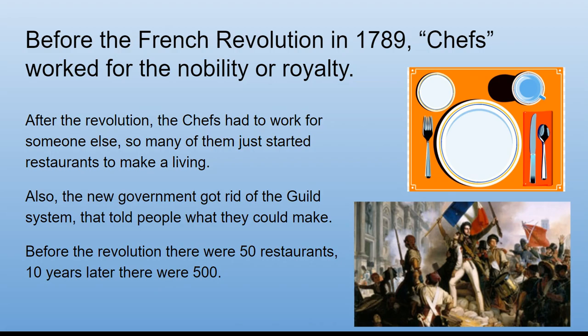Before the French Revolution in 1789, chefs worked for the nobility or royalty — mostly as a cook in a private home of a wealthy person. After the revolution, chefs had to find other work, so many of them started their own restaurants. The new government also abolished the guild system, freeing people to make whatever they wanted. Before the revolution there were only 50 restaurants, but 10 years later there were 500.